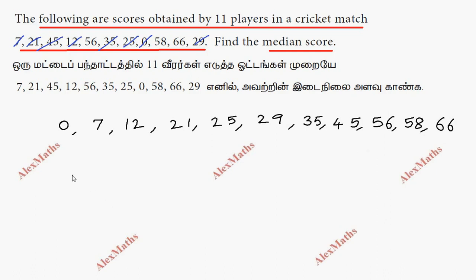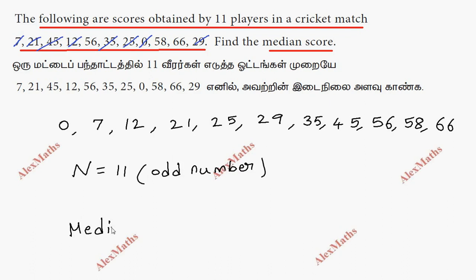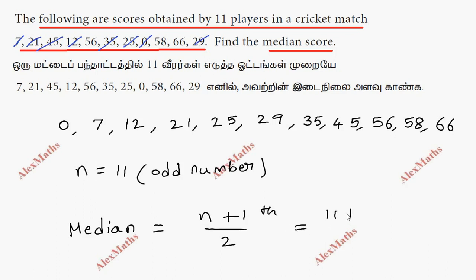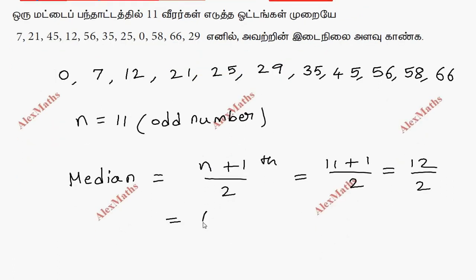Since n is 11, this is an odd number. For an odd number, the median formula is: median equals the (n+1)/2 th value. Applying this: (11+1)/2 = 12/2 = 6. So we need the 6th value.